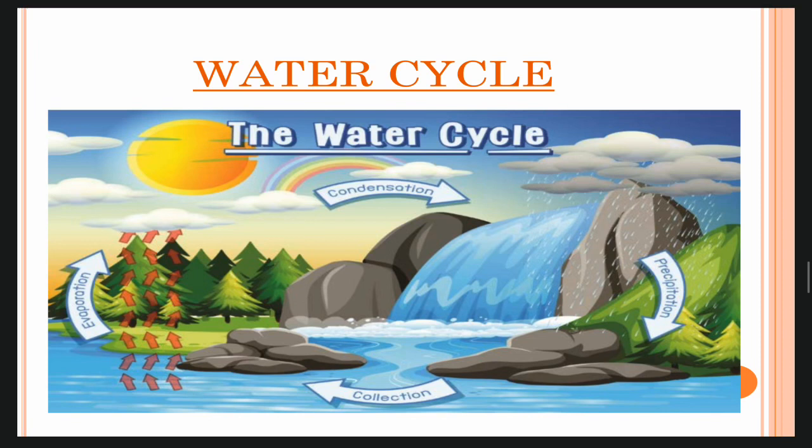Water cycle is a continuous process which helps in changing water from one form to another. By the heat of the sun, the water of the water bodies gets heated up and changes into water vapour. This process is called evaporation. Water vapour goes up in the sky, comes in contact with cool air and changes into tiny droplets. This process is called condensation.